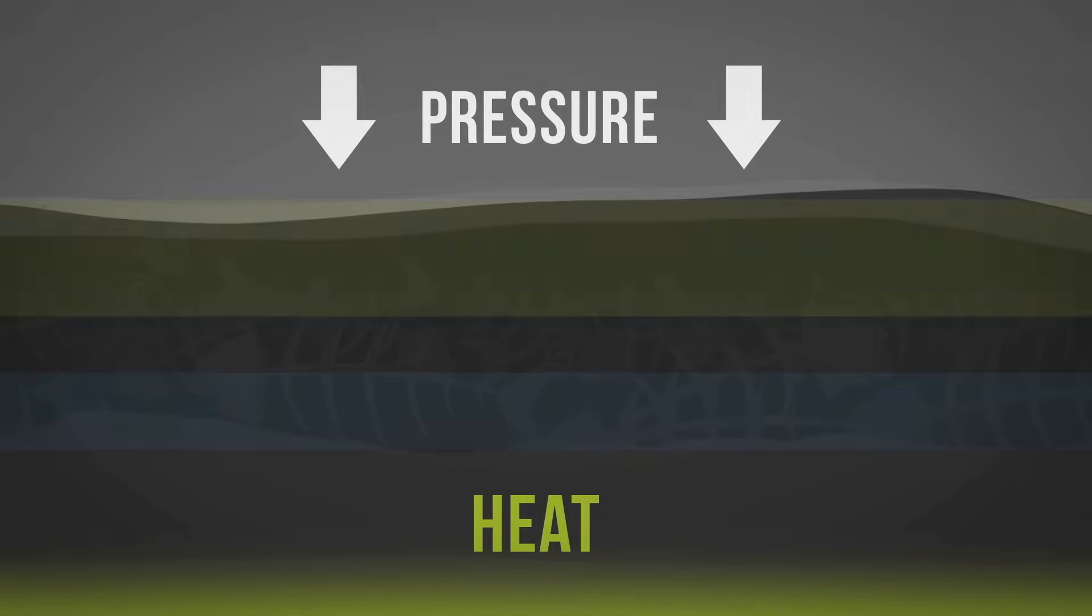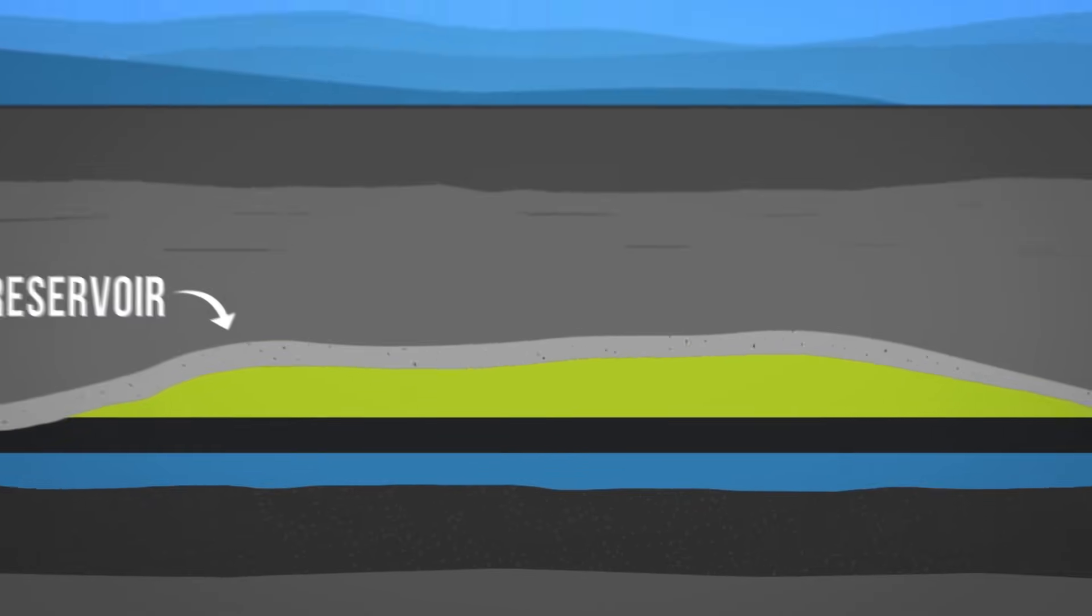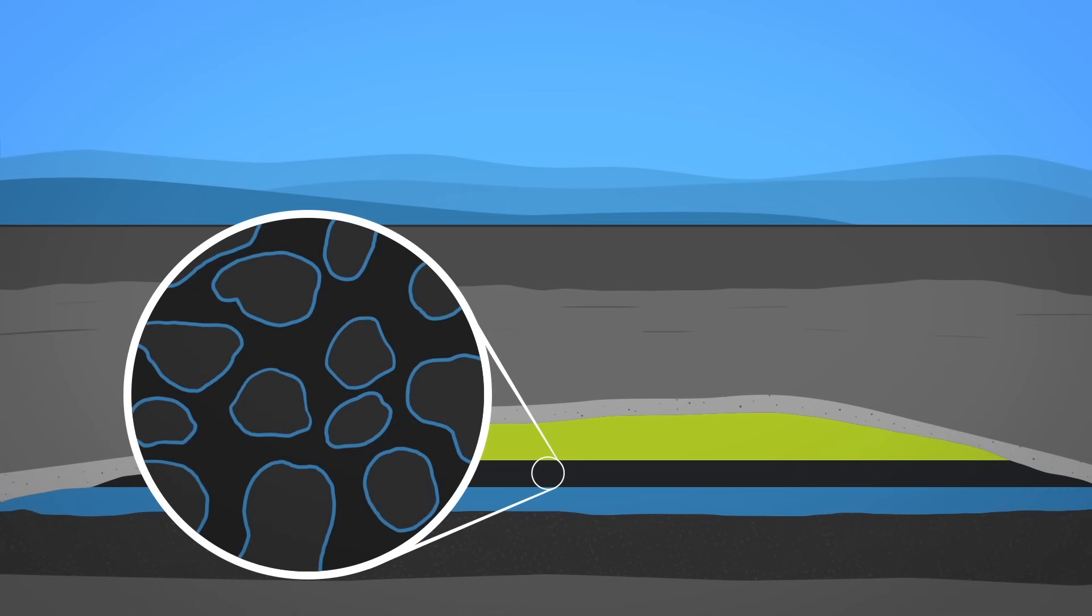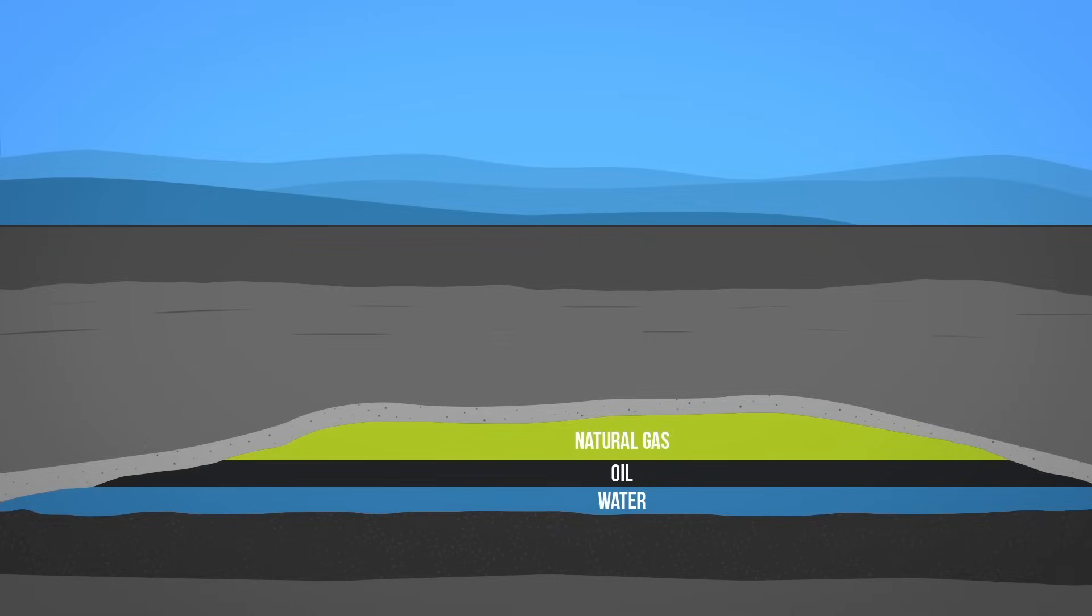Natural gas is found in underground rocks called reservoirs. The rocks have tiny spaces called pores that allow them to hold water, natural gas, and sometimes oil. The natural gas is trapped underground by impermeable rock, called a cap rock, and stays there until it is extracted.